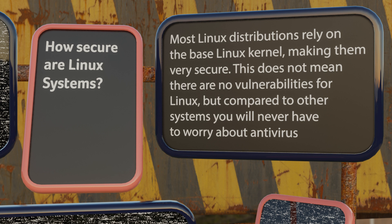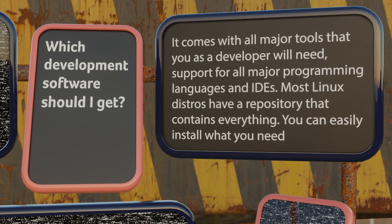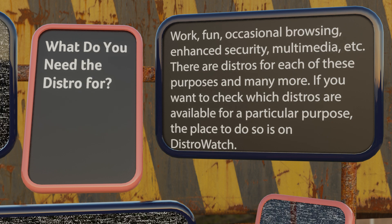While this does not mean there are no vulnerabilities for Linux systems, compared to other systems such as Windows, you'll never have to worry about antivirus. Which development software should I get? Linux contains tens if not hundreds of thousands of software packages. It comes with all the major tools that you as a developer will need, including support for all major programming languages and IDEs. Most Linux distros have a software repository that contains everything you need, and you can easily install what you do need with a few clicks. What do you need the distro for? The most important factor when choosing a Linux distro is what you need it for — fun, work, occasional browsing, enhanced security, multimedia or development.